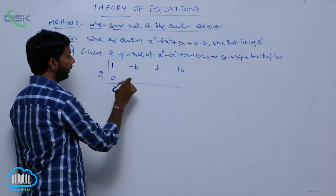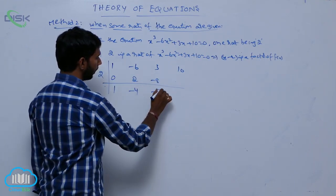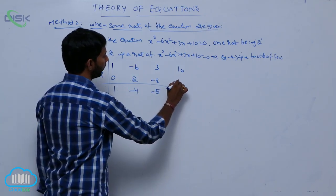1 plus 0 is equal to 1, 1 into 2, 2 that is -4, -4 into 2, -8 is equal to -5, -5 into 2, that is equal to -10.